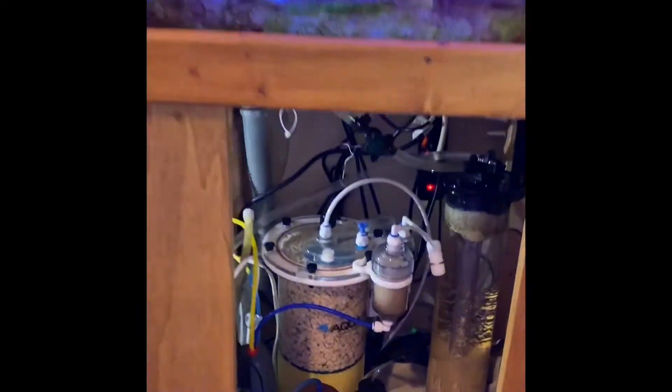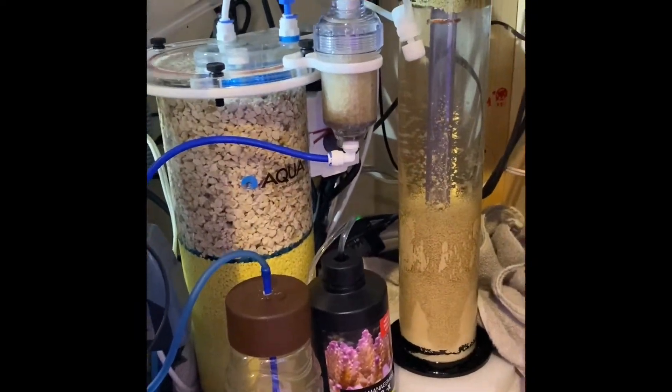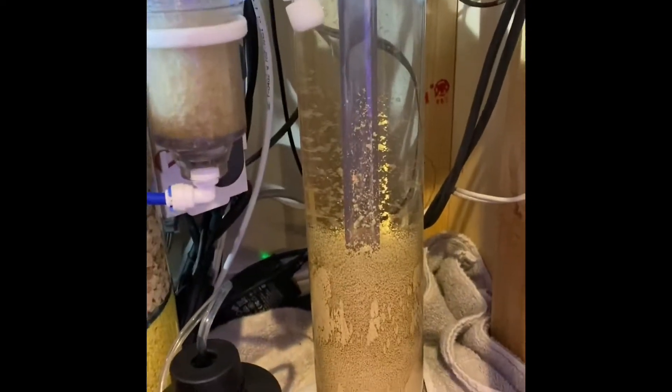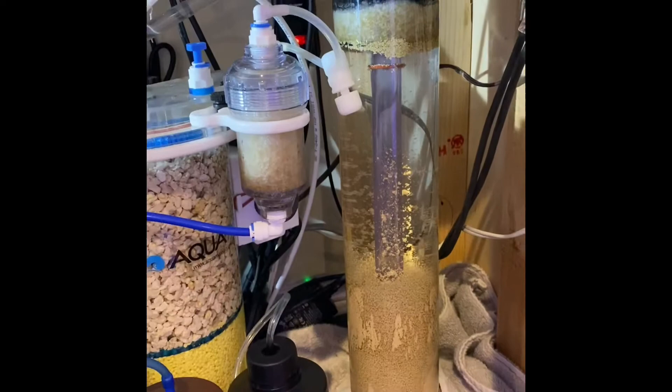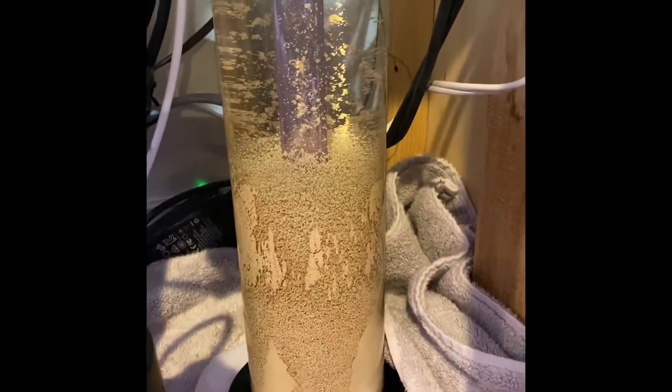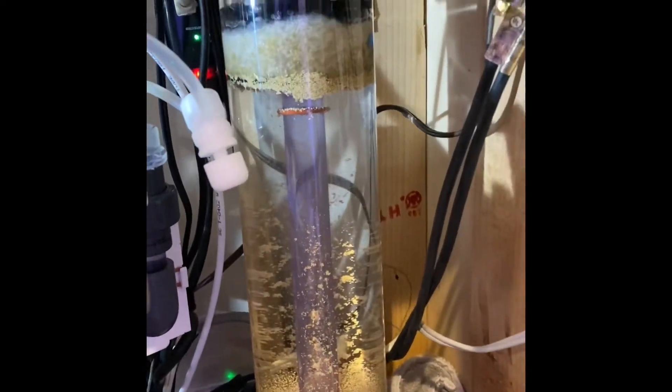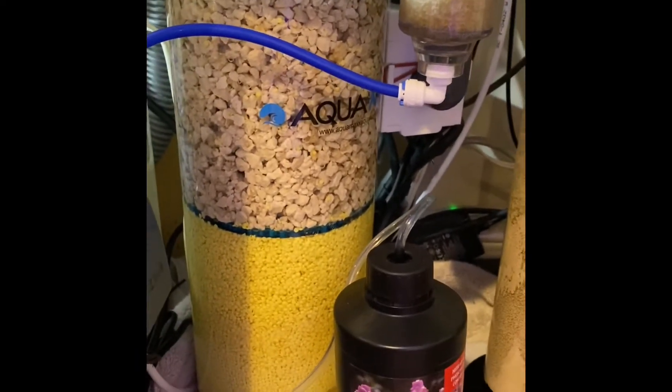I've taken out the bio pellet reactor. Now I just have my purigen reactor. I have modified it just a little bit since my original video on that. You gotta mainly keep a lower flow so that the majority of it doesn't go up there. See there's a lot more media in there.